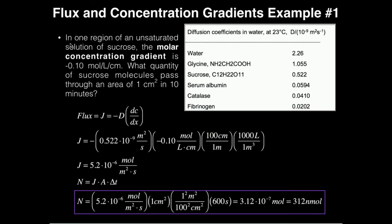Let's read the problem. In one region of an unsaturated solution of sucrose, the molar concentration gradient is negative 0.1 moles per liter per centimeter. This molar concentration gradient, recall, is our derivative dc/dx, so this is not your usual differential calculus. You just plug the number in.